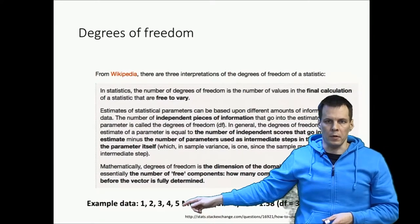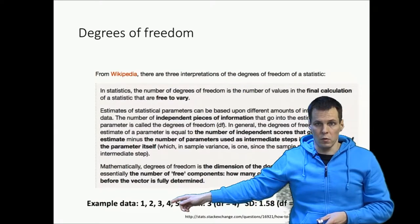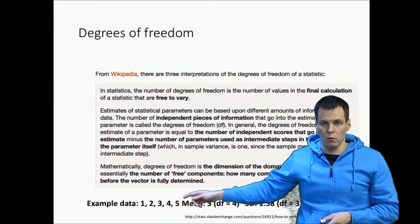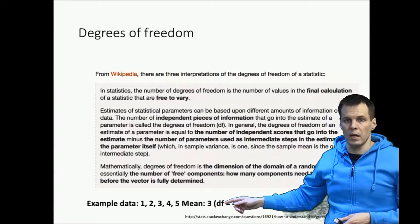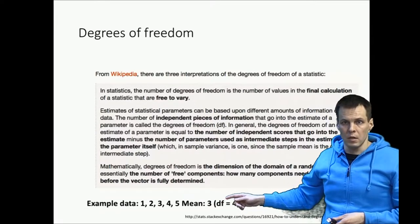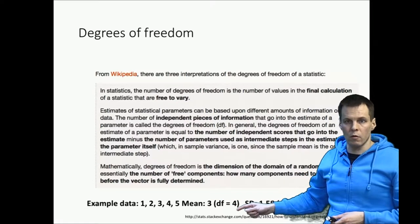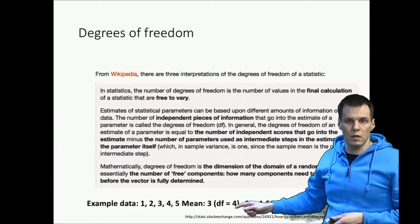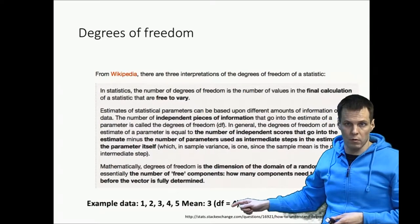Let's say that we have example data of five observations which get values one, two, three, four and five and the mean of this observation is three. By calculating the mean we consume one degree of freedom so this analysis has four degrees of freedom altogether.